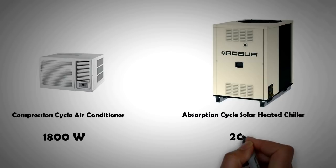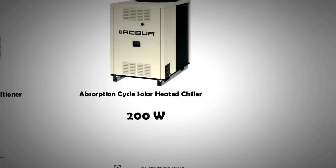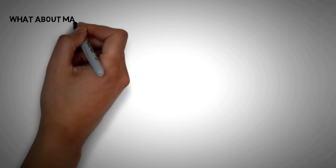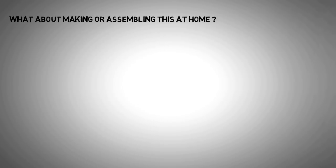The electricity is used just to run the small pumps to circulate the refrigerant and the heating fluid from the solar collector. The main energy needed to run the cycle comes from solar heat. The question now is can you make a small size vapor absorption AC at home? Yes, absolutely you can.